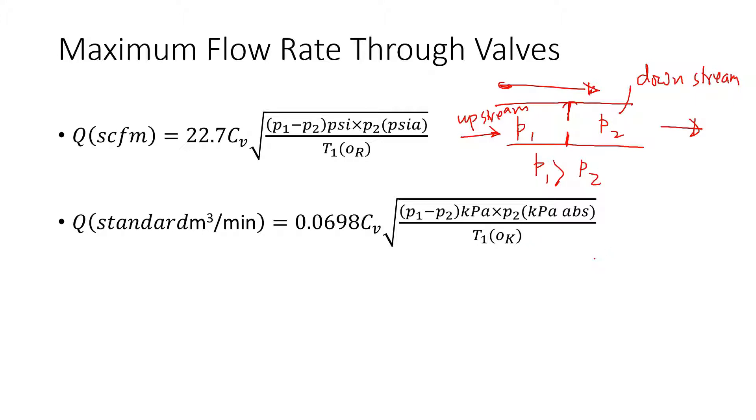Now, as we increase the pressure difference, the flow will increase. However, there is a limit. If P2 is more than 0.53 P1, then the flow starts to choke.